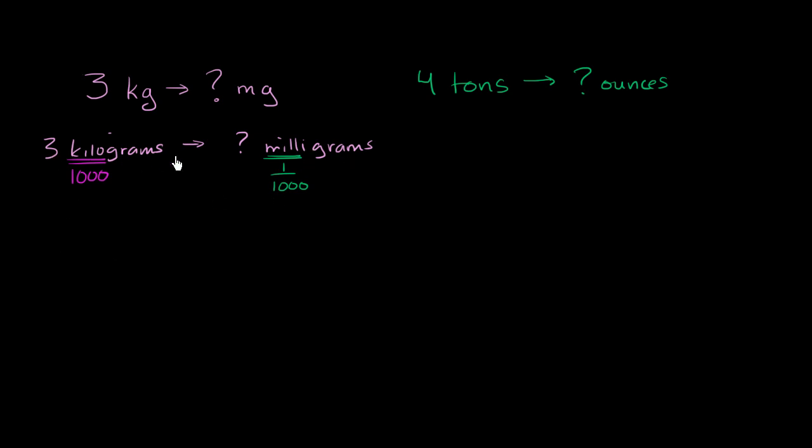So let's just convert to grams first. Let's go from kilograms to grams. And then we can go from grams to milligrams. So we could say that 3 kilograms is going to be equal to 3 times 1,000 grams. So that's 3,000 grams. That's one way to interpret kilo. So this gets us to 3,000 grams.